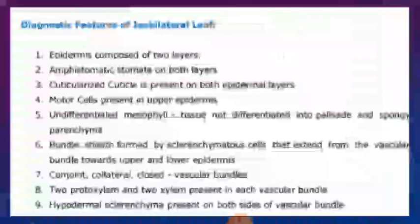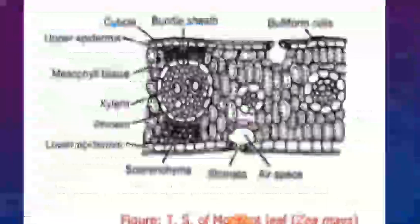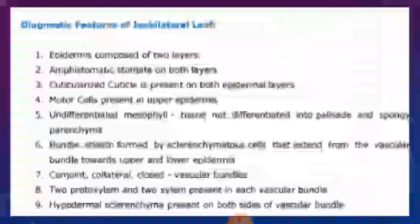The mesophyll tissue is undifferentiated — there is no differentiation into palisade and spongy parenchyma. In the dorsal ventral leaf, mesophyll is differentiated into palisade and spongy parenchyma, but in the isobilateral leaf, mesophyll is undifferentiated.